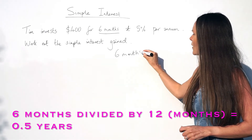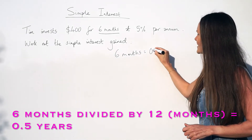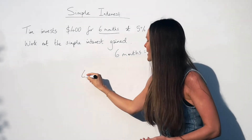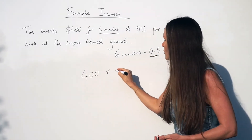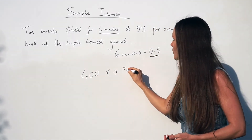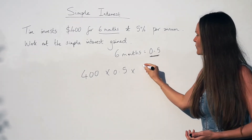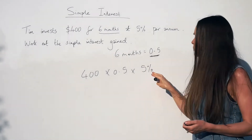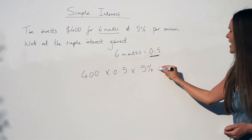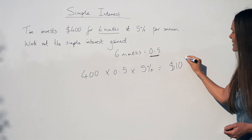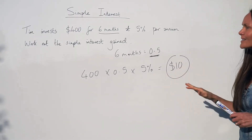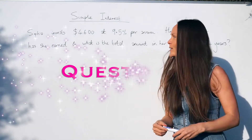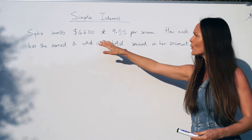Six months is half a year, so you can change the six months to 0.5. Then you do the multiplication: 400 multiplied by 0.5 multiplied by five percent, or 0.05 if you prefer to write that as a decimal.